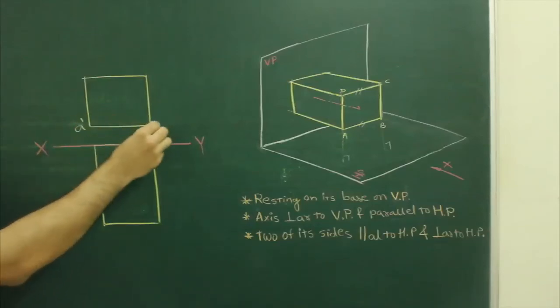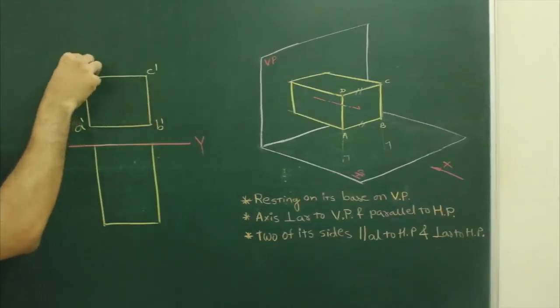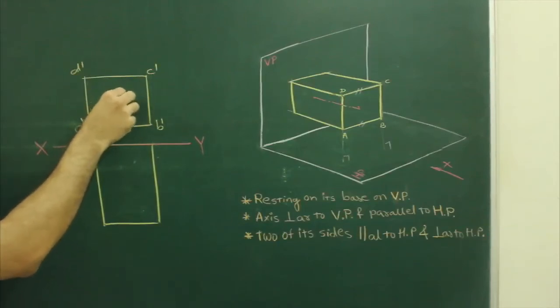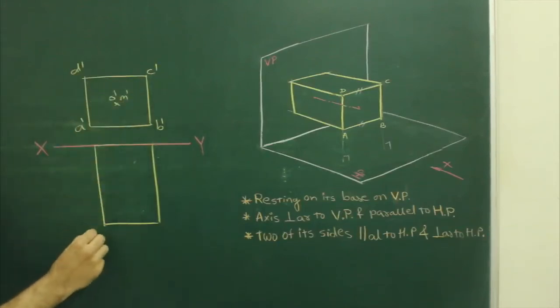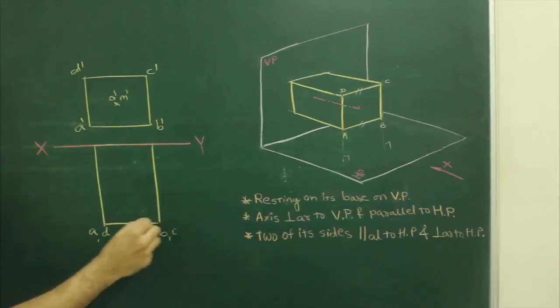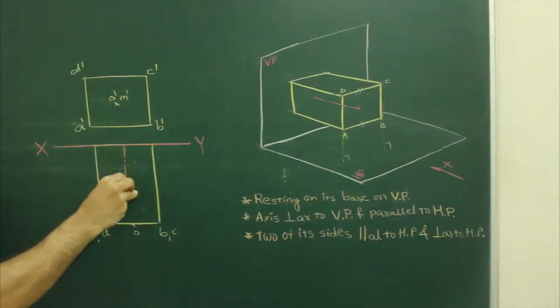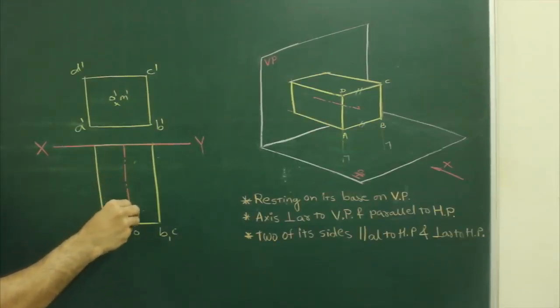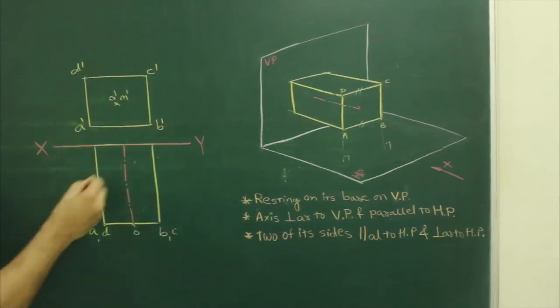This is A dash, B dash, C dash, D dash, this is O dash, M dash, axis. This is A, B, C, O, and this is M.